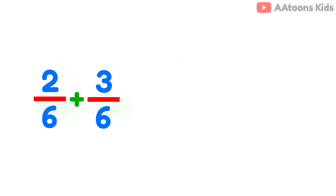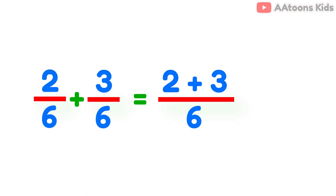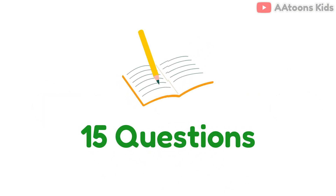Now let's add fractions: 2 over 6 plus 3 over 6. Since the denominator 6 is the same, we just add the numerators. So 2 over 6 plus 3 over 6 equals 5 over 6.